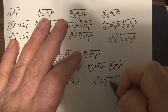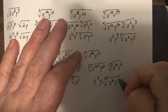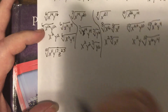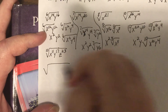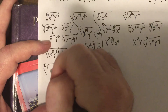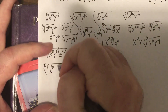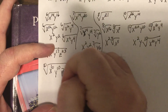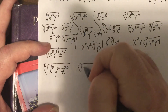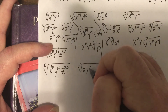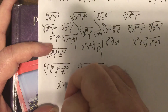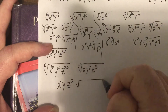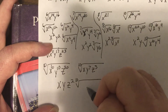For the final multi-variable problem involving X to the 6th, Z to the 30th and additional terms, dividing powers by the index gives X, Y to the 7th, Z cubed as part of the simplified result.